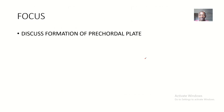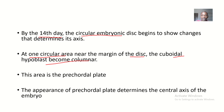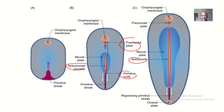Now let's talk about the formation of the pre-cordial plate. How is the pre-cordial plate formed? By day 14, the circular embryonic disc begins to show changes that determine its axis. At one circular area near the margin of the disc, the cuboidal hypoblast becomes columnar. So this area is the pre-cordial plate.